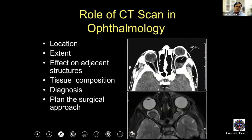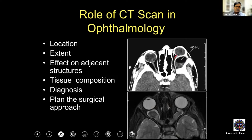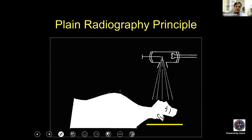The role of CT scan in ophthalmology is manifold. It will tell you where exactly a particular lesion is, what is the extent of the lesion, and the effect on adjacent structures. You can see that the optic nerve is gently pushed towards the medial side by this dermoid on the lateral side. It will also tell you tissue composition — this particular lesion has variegated tissue composition. It will tell you the diagnosis, because many times the characteristic features of the lesion are revealed by the CT scan, not always. And it will help you plan the surgical approach.